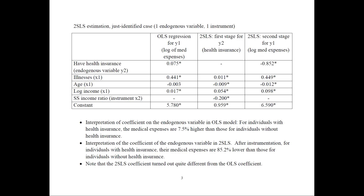For the two-stage least squares estimation, the just-identified case has one endogenous variable and one instrument. In this first case, we estimate an OLS regression for Y1 — the log of medical expenses — with health insurance as our endogenous variable and a set of exogenous variables. That instrument does not belong in the OLS regression. The coefficient interpretation is straightforward: for individuals with health insurance, medical expenses would be 7.5% higher than those without health insurance, since the variable is measured in logs.